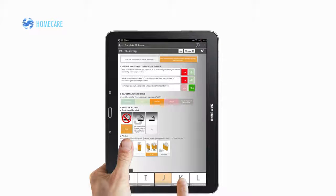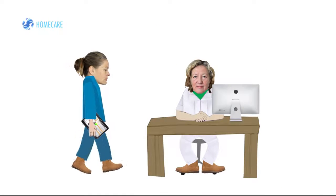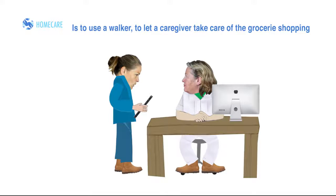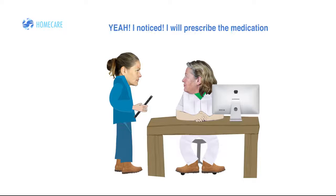She just touches the images on the tablet and all the information is there. And not just on her own tablet, but the information is also immediately available on the computer of the general practitioner. The most important advice of RAI for Fransje is the use of a rollator, a mantle to ensure the messages and pain medication.